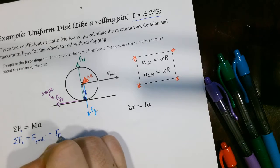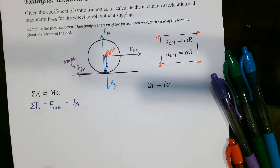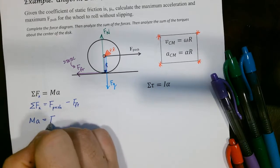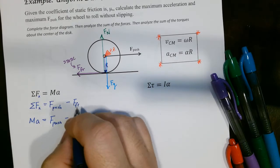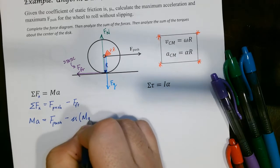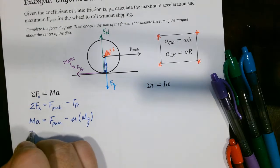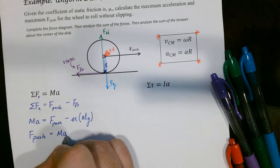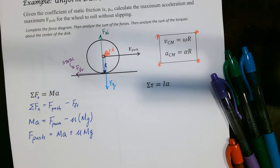Setting the equations equal: ma equals F_push minus μ times F_normal, and since F_normal equals mg, we get ma = F_push − μmg. Rearranging, F_push equals ma plus μmg.